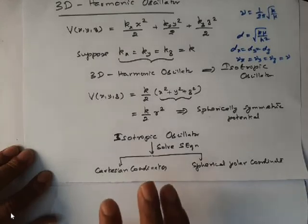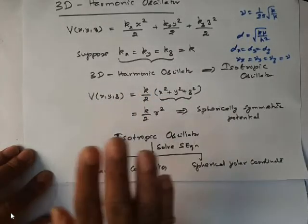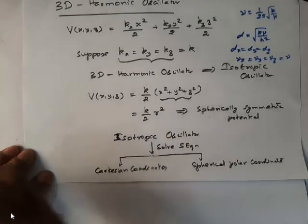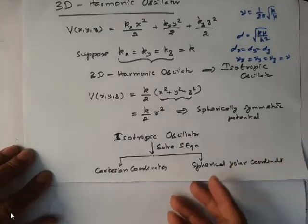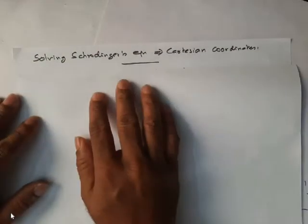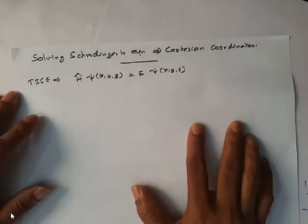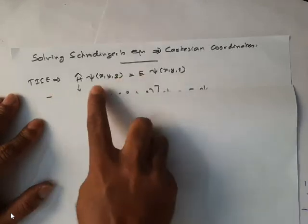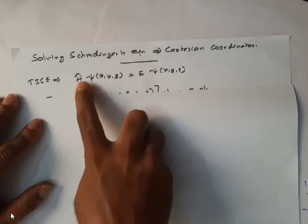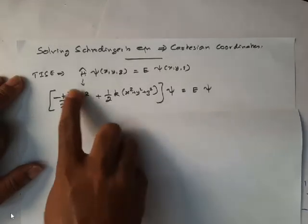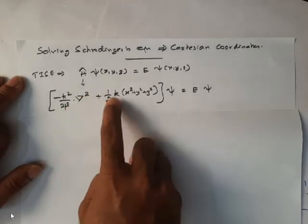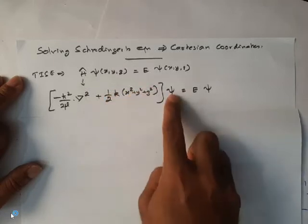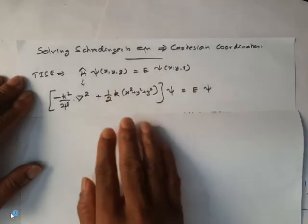So the isotropic oscillator problem — the Schrödinger equation for the isotropic oscillator — can be solved either by using Cartesian coordinates or by using spherical polar coordinates. What I am going to do in this lecture is give you the approach and the final solution; I am not going to discuss the complete derivations. You will come to know how to solve this type of problem once we discuss the hydrogen atom problem and the spherical harmonics problem.